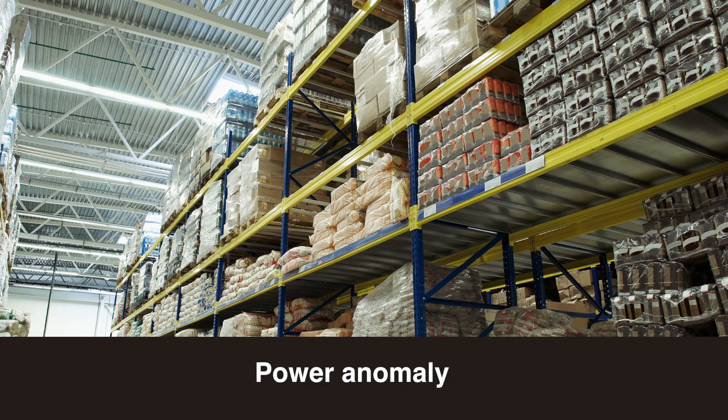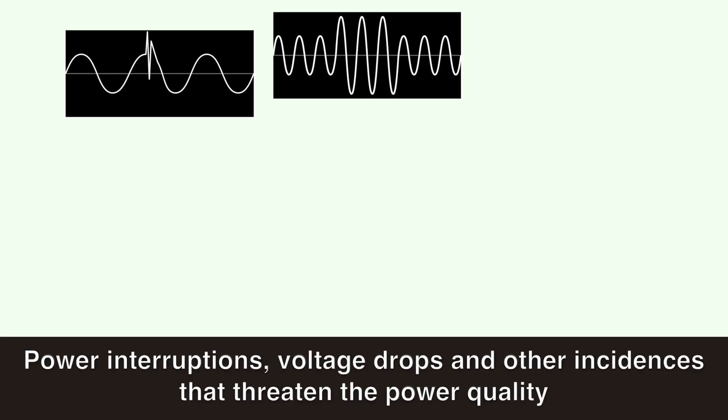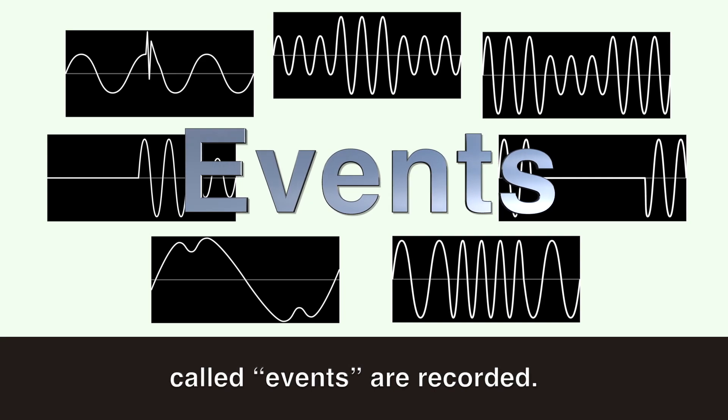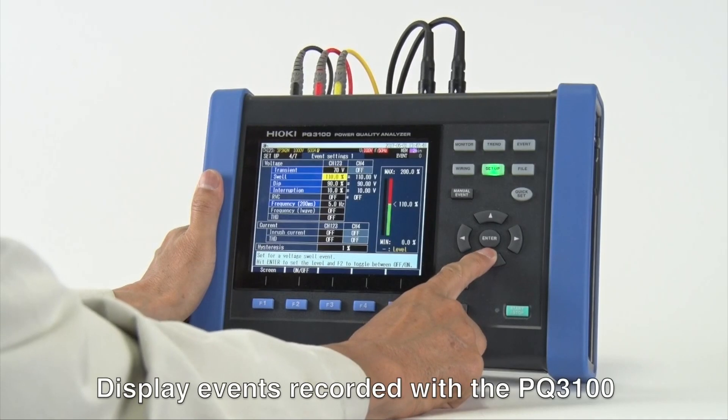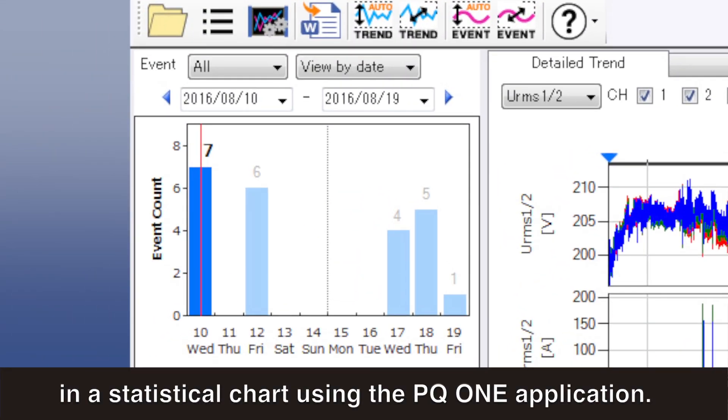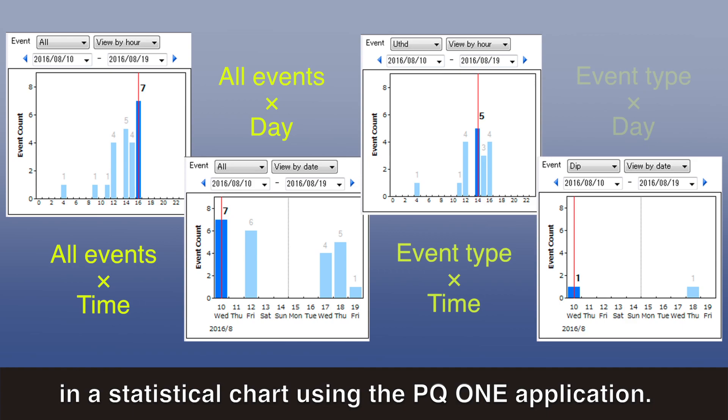When a power anomaly occurs, power interruptions, voltage drops, and other incidents that threaten power quality called events are recorded. Display events recorded with the PQ3100 in a statistical chart using the PQ1 application.